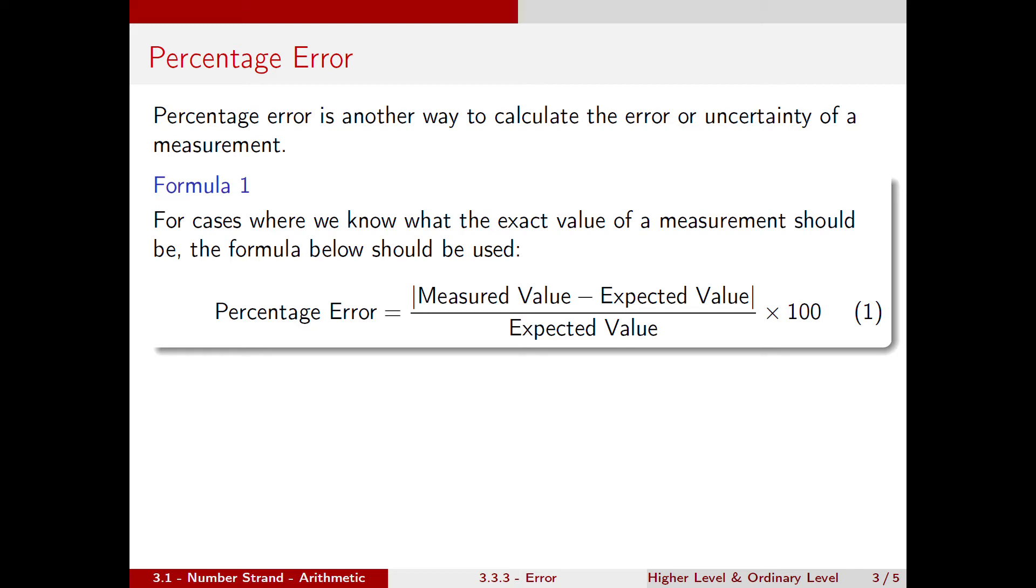The percentage error is equal to the absolute value of the measured value minus the expected value, all over the expected value, times 100. The times 100 will turn this into a percent.